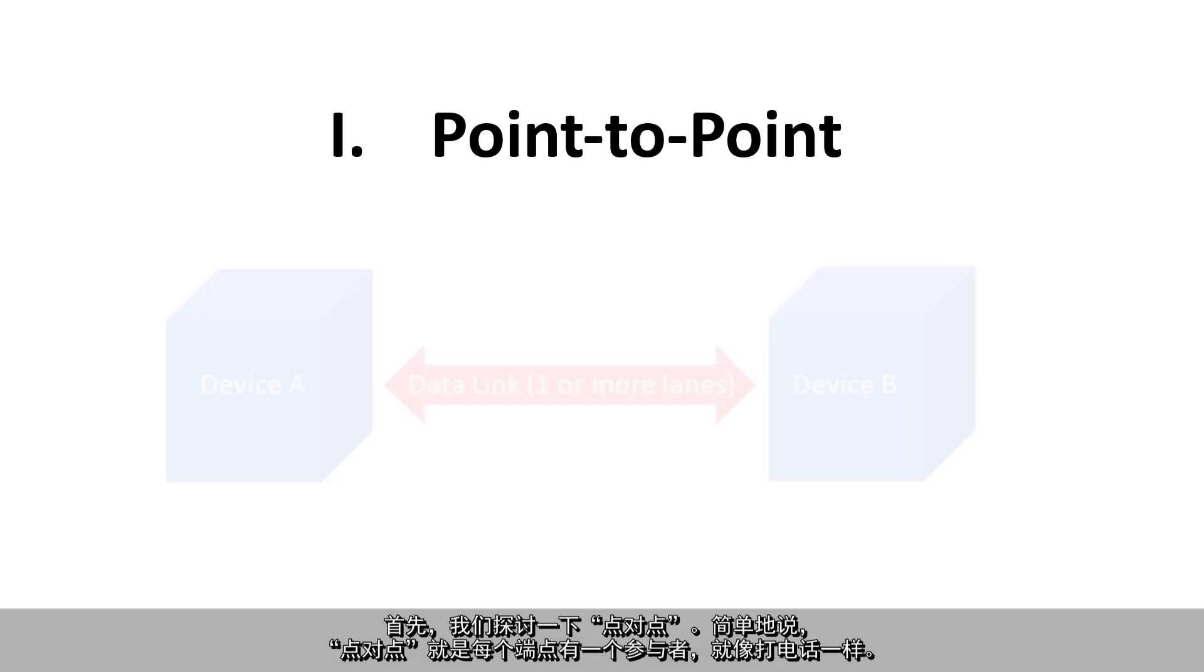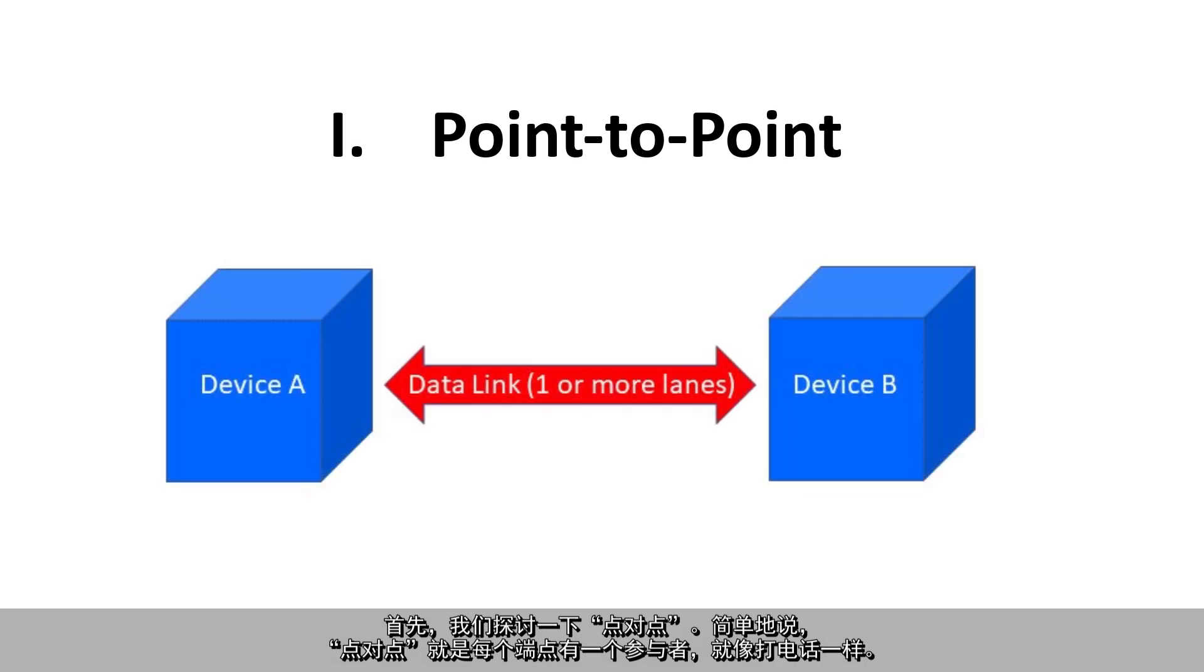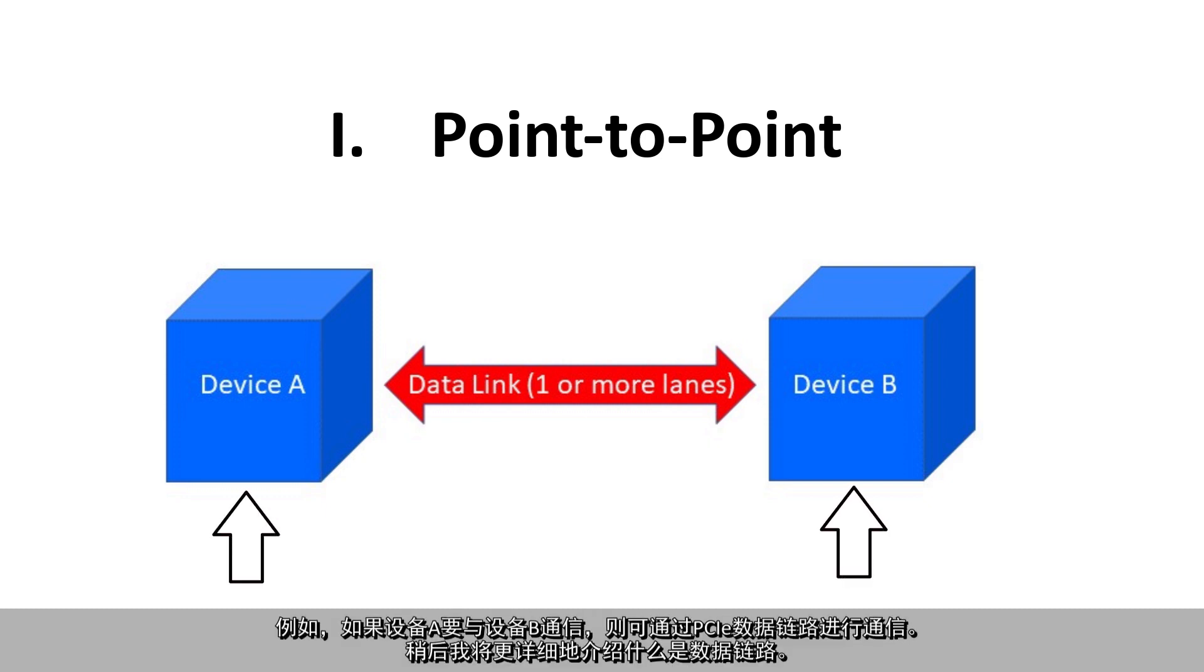First, let's discuss point-to-point. Point-to-point simply means that there is one participant at each endpoint, such as in a telephone call. So, for example, if device A wants to communicate with device B, it will do so over a PCIe data link. And I'll describe what a data link is in more detail a bit later.